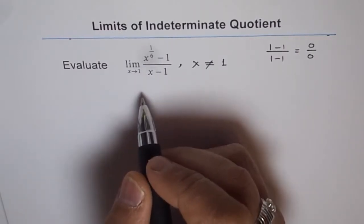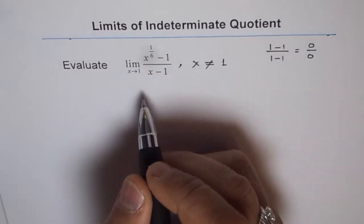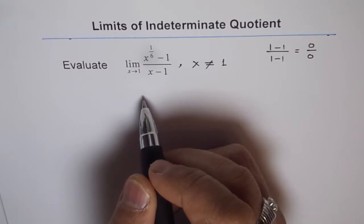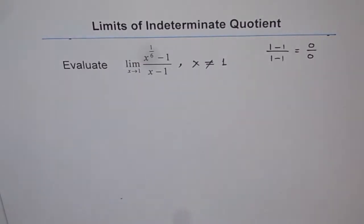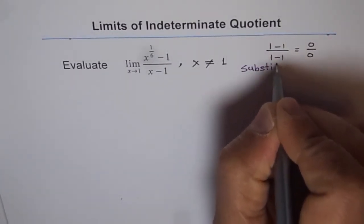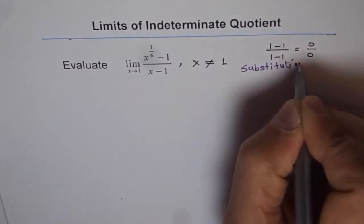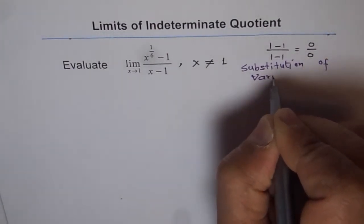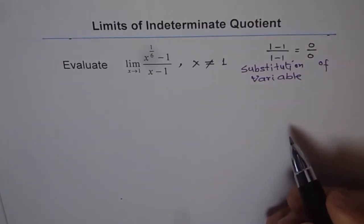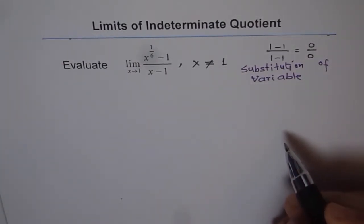Now this is a radical expression, and factoring such radicals is kind of difficult. So we'll introduce a technique called substitution of variable. Let's remember this technique — it is called substitution of variable — and I'll have a couple of examples to explain how we substitute one variable with another to simplify the problem.